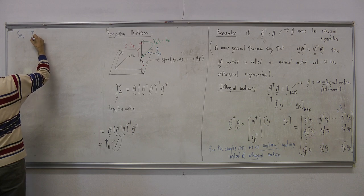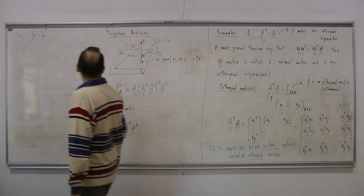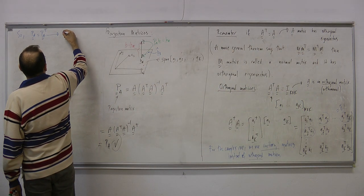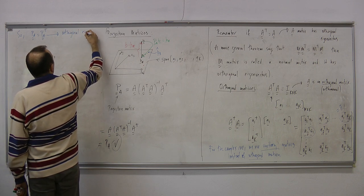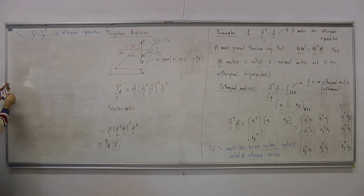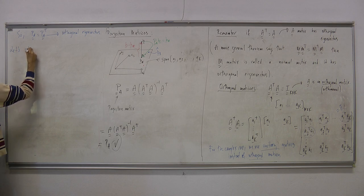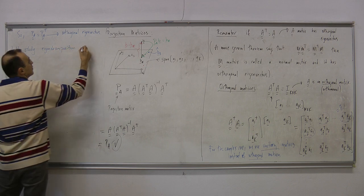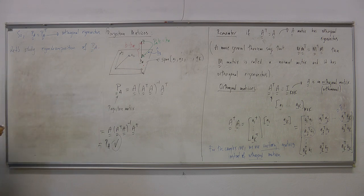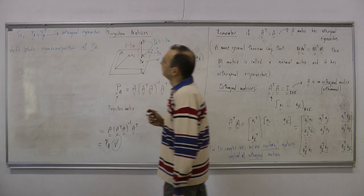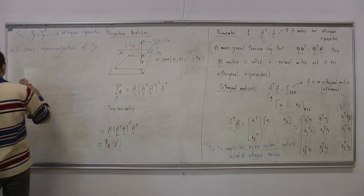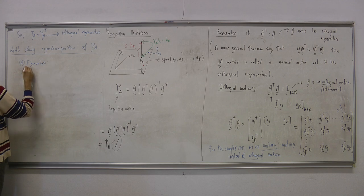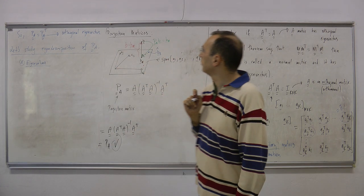Pa equals Pa transpose, so Pa is a symmetric matrix. That means one more time: orthogonal eigenvectors. Let's study the eigenvectors of Pa. How can I find the eigenvalues of Pa from these properties?